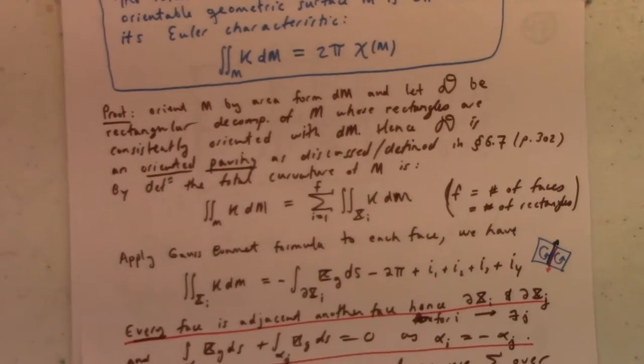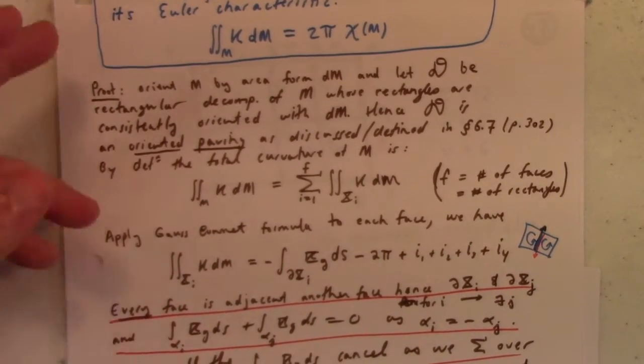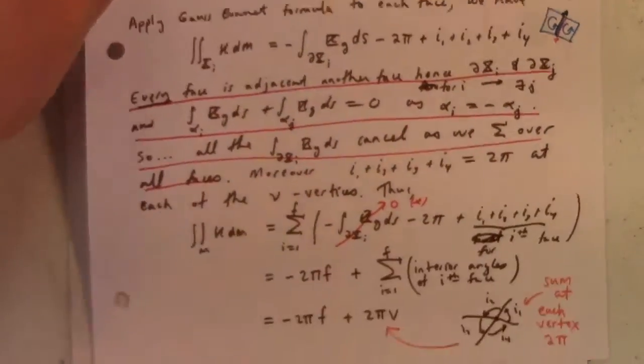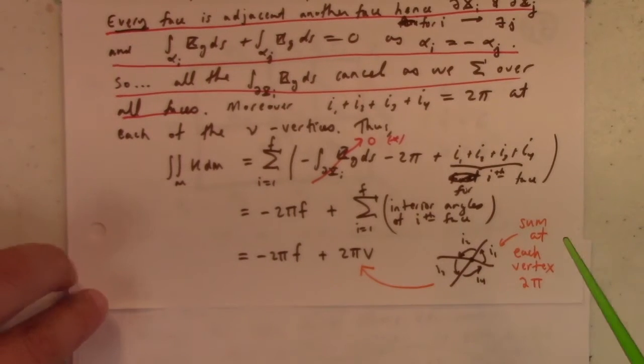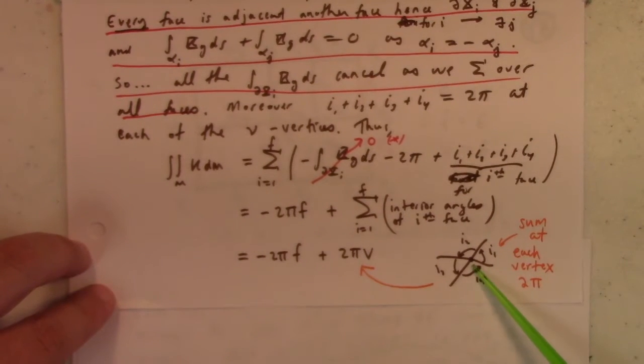So I was stuck on why the interior angles of the i-face works out to 2πv. It's actually really simple, as is explained in O'Neill. So if you look at a particular vertex, all of the interior angles in that vertex, of course, are giving you 2π. The total angle here, interior angle is 2π.